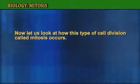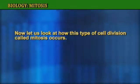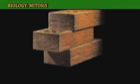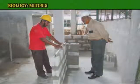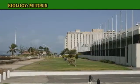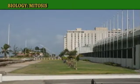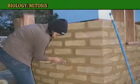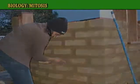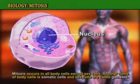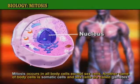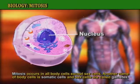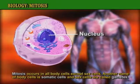Let us look at how this type of cell division called mitosis occurs. Cell division is the foundation or cornerstone of life. It is synonymous to the foundation of any building or house, with each cell being similar in function to each brick in the walls of a building. Mitosis occurs in all body cells except sex cells. Another name for body cells is somatic cells, and sex cells are called gametes.